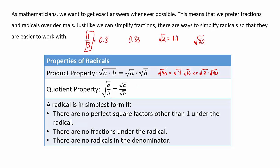The same is true if we have a fraction under a radical — we're allowed to break it into a radical on top and a radical on the bottom. For example, the square root of 25/4 doesn't simplify inside, but we can change it to the square root of 25 over the square root of 4, and both of those have clean square roots, so we end up actually getting rid of the radical.